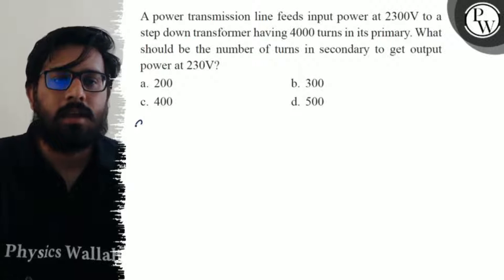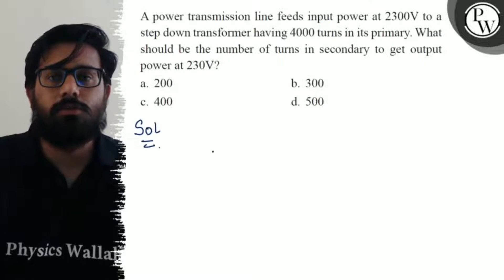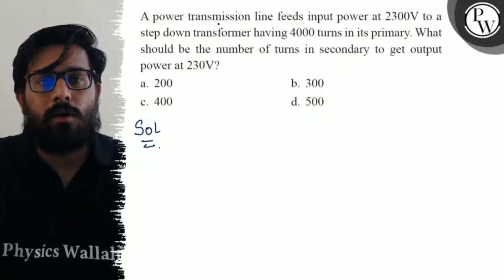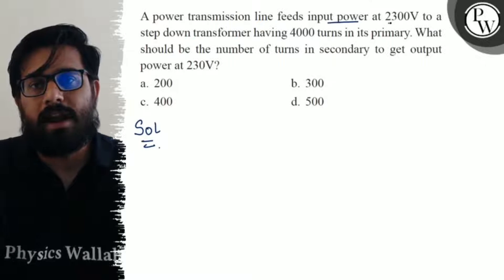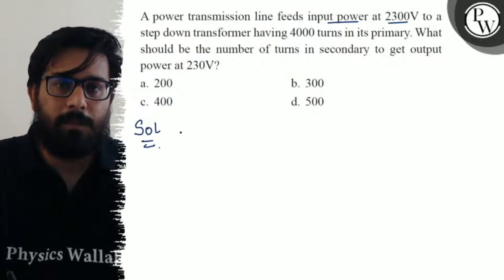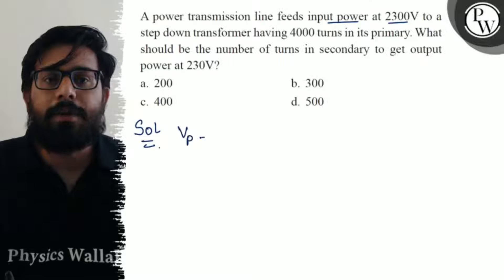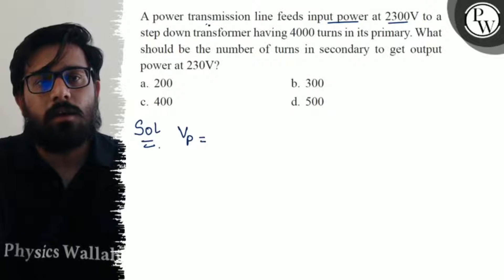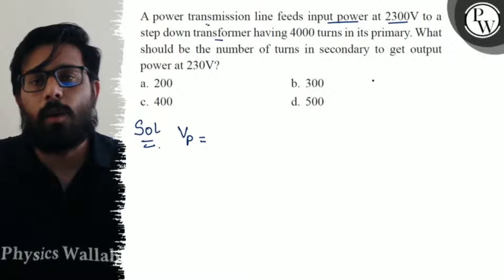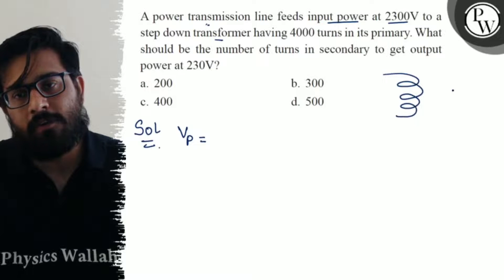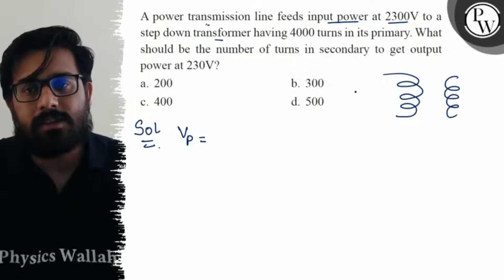In this question, the power transmission line feeds input power at 2300 volts. This will be actually what is in the primary circuit, since this is the case of a transformer. In a transformer we have two different types of circuits: the first is the primary circuit and the second one is the secondary circuit.